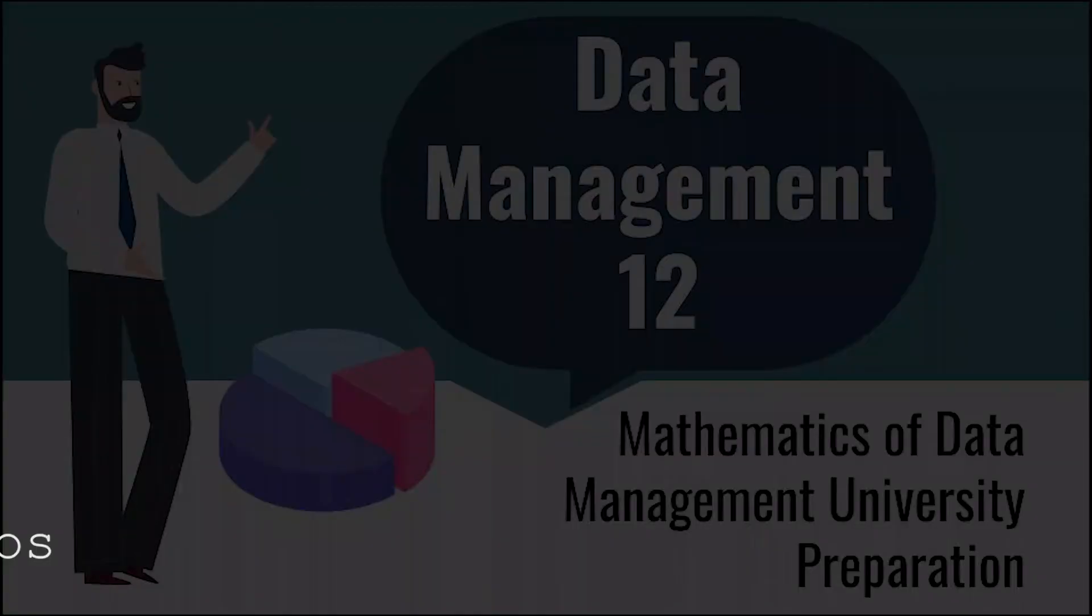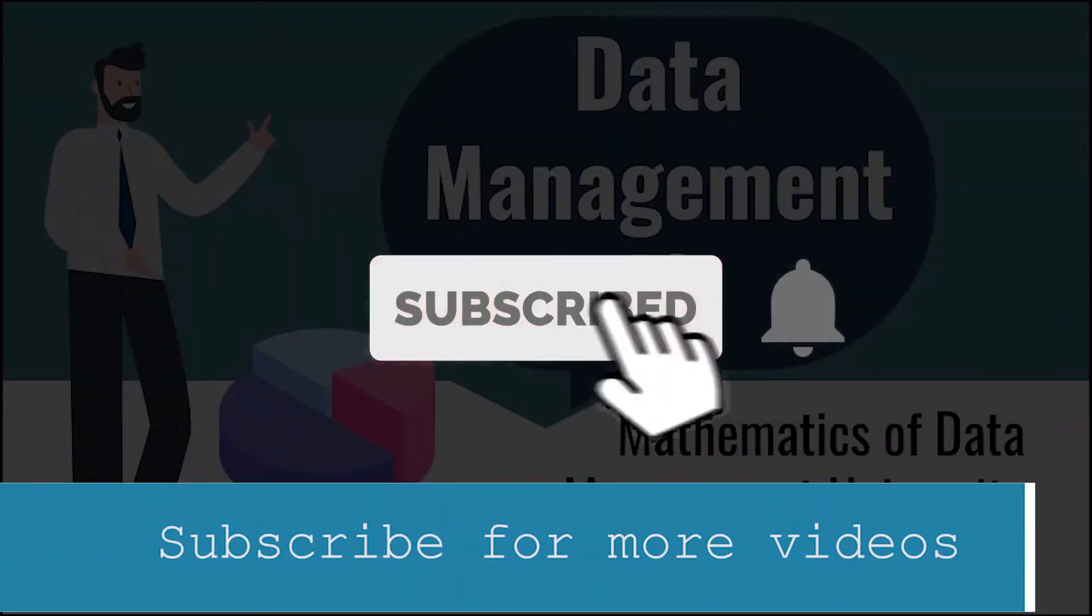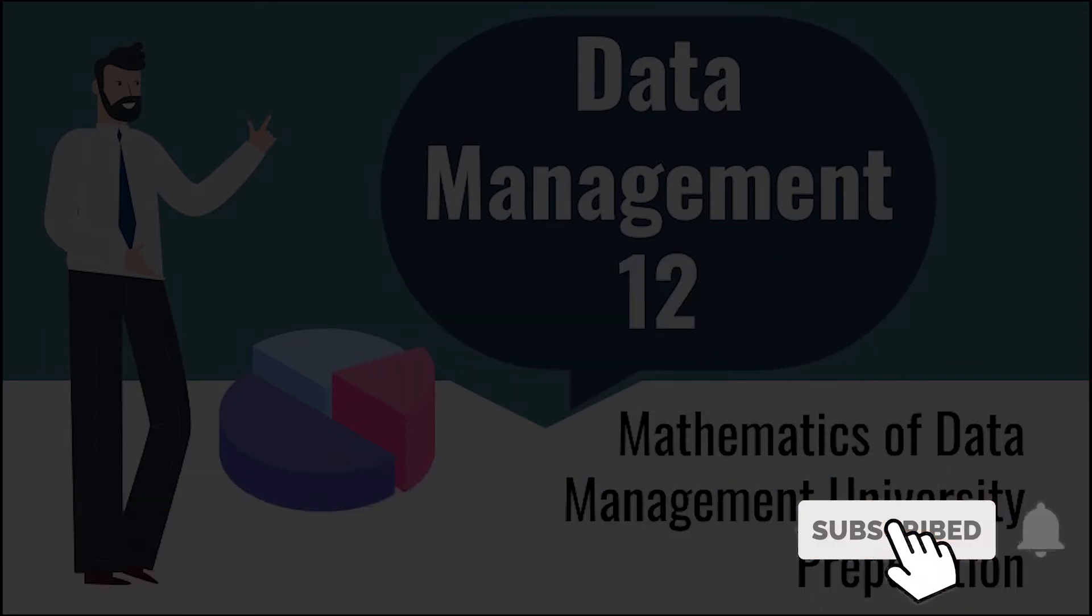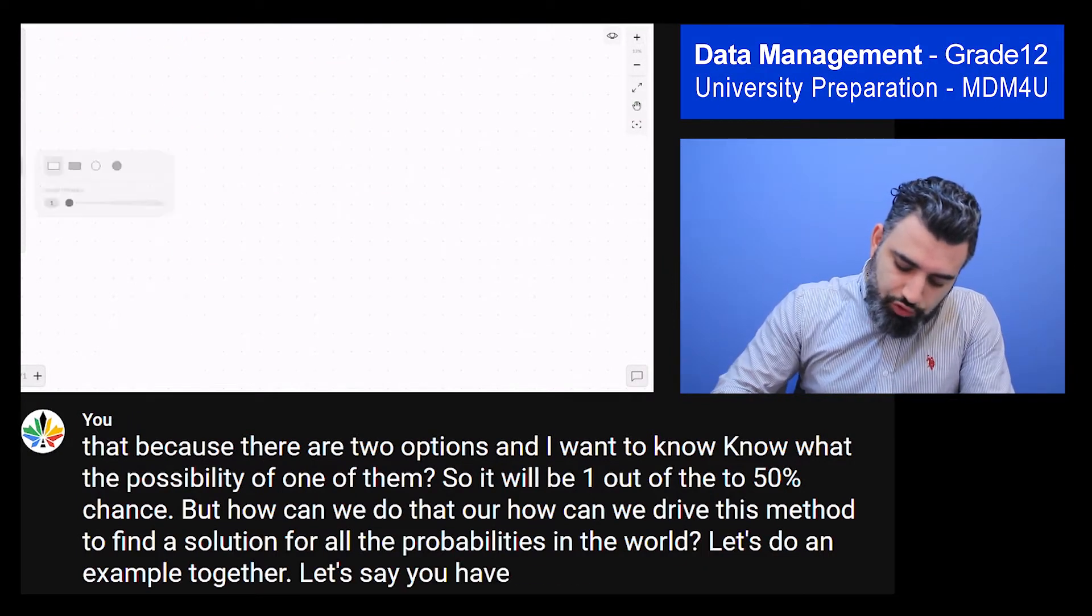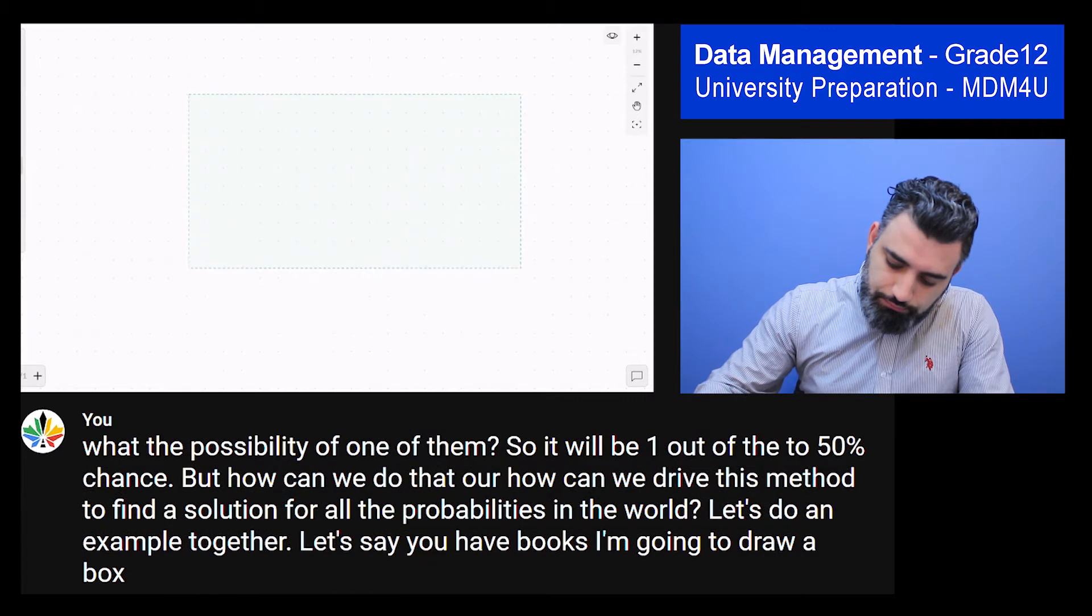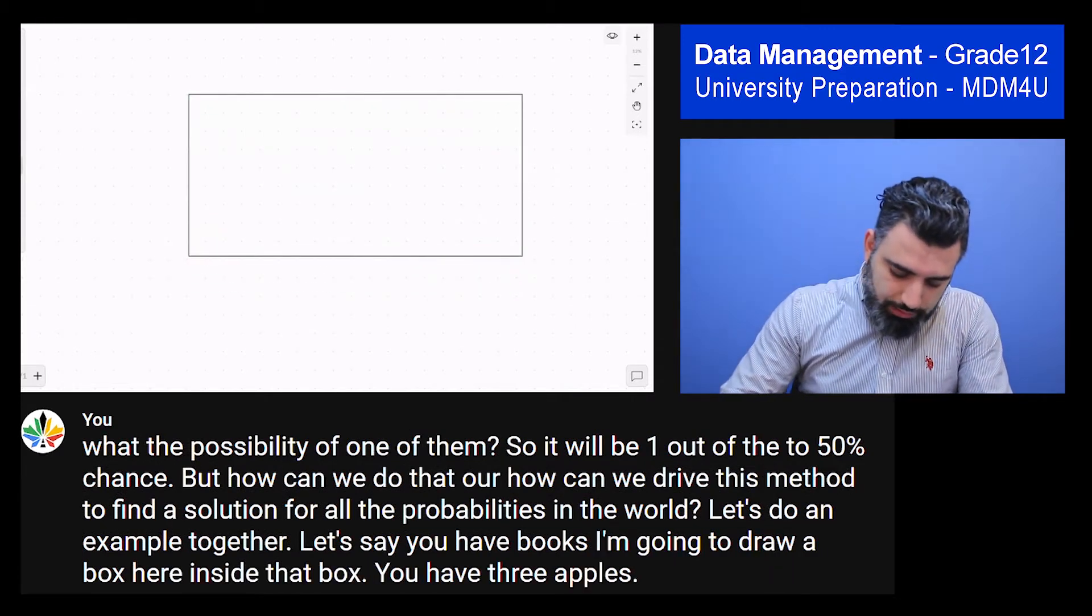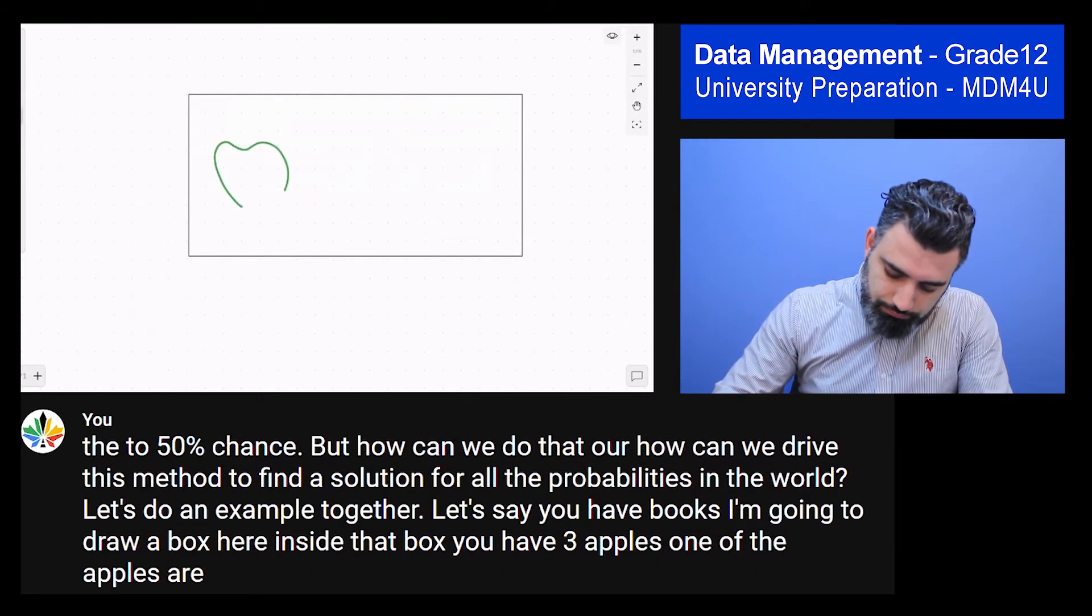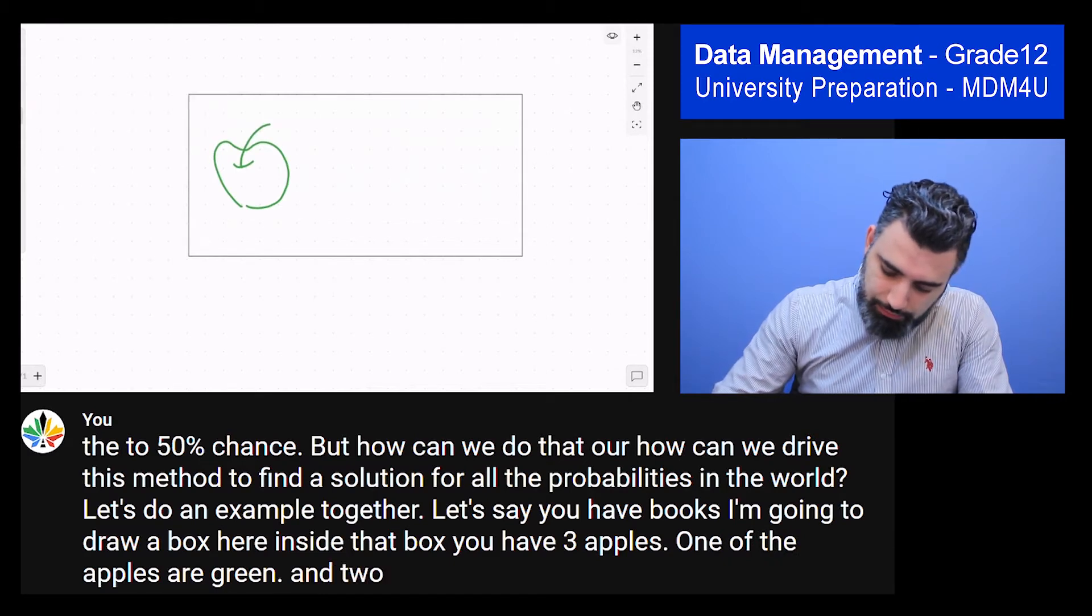Let's do an example together. Let's say you have a box. I'm going to draw a box here. Inside that box, you have three apples. One of the apples are green.